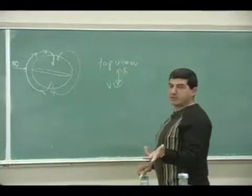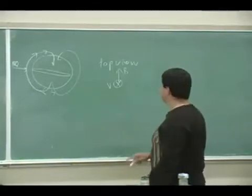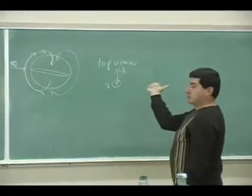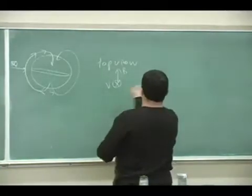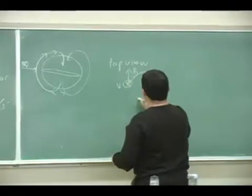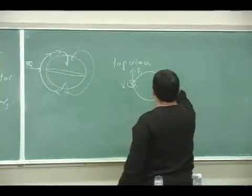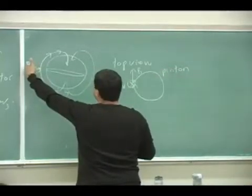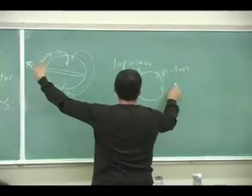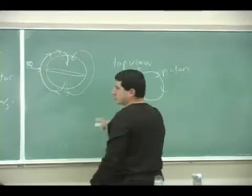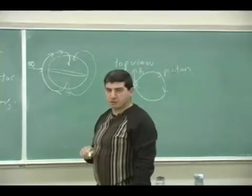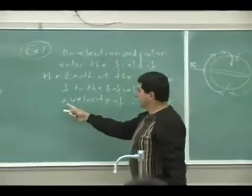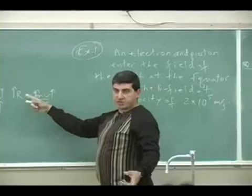Depending on whether it's the electron or the proton, V cross B determines what happens. The proton is going to go this way, and the electron is going to go the other way. Which one do you suspect is going to have the smaller radius?